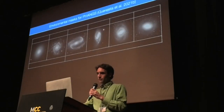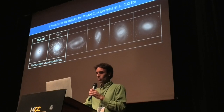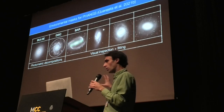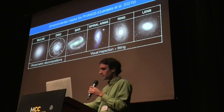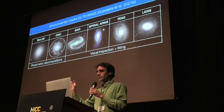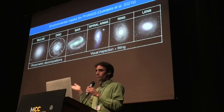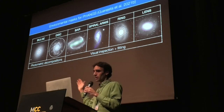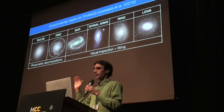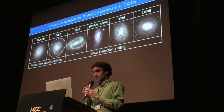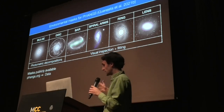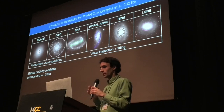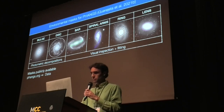Within PHANGS, I have been working on defining morphological substructures and looking at how the surface densities in stellar mass, molecular gas, and star formation rate — and implied efficiencies — change. But I'm not going to talk about this in detail; you can check out the paper or ask me later.